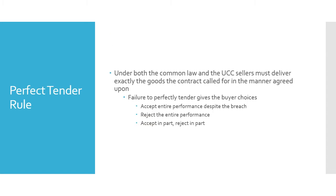The perfect tender rule — you may have discussed this in 2080. We're more interested in what happens when the seller does not perfectly tender, which gives the buyer three options. Using the same example: a poultry farmer has contracted to deliver 500 chickens to a restaurant before noon on Friday, but shows up at 1 PM on Friday. The restaurant owner has three choices.